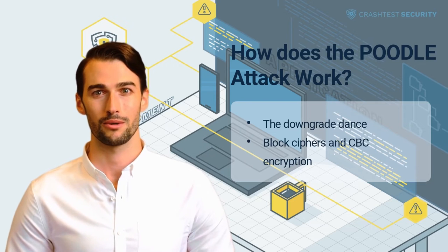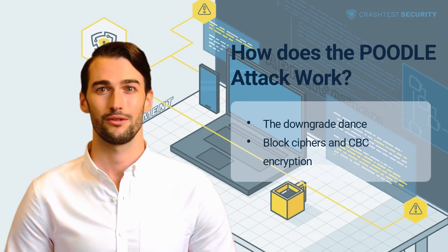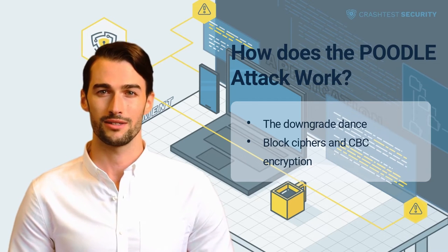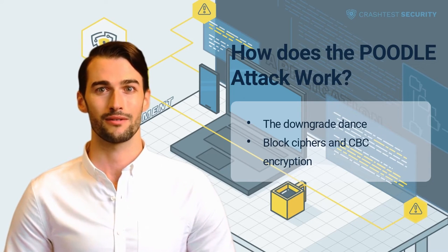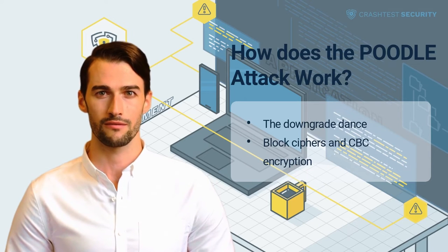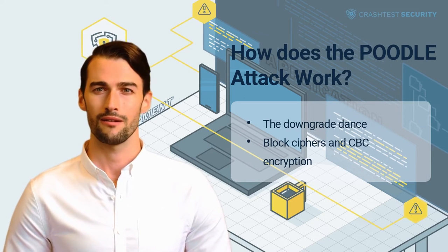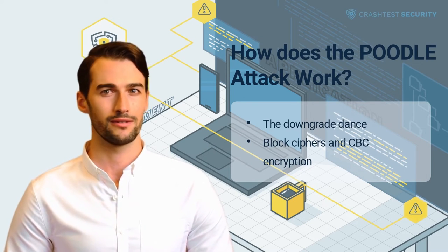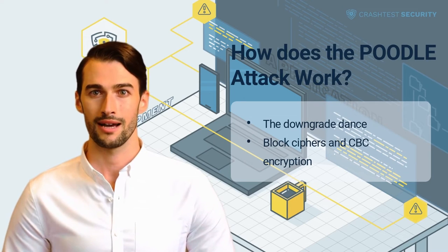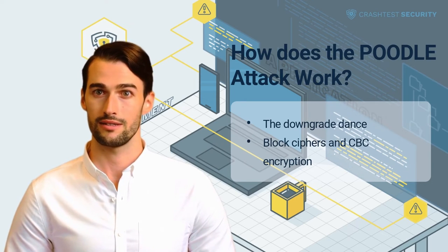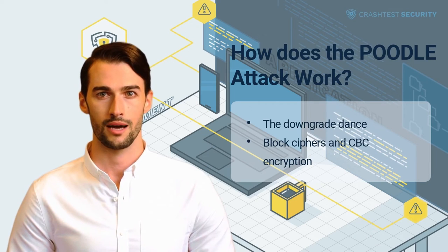Cipher suites susceptible to a Poodle attack use a cipher block chaining encryption mode. In CBC, the plaintext is first broken up into blocks, then padding bytes or a whole padding block are added at the end to ensure all blocks are the same size. The plaintext in the first block is XORed with a random initialization vector to generate an intermediary value, which is then encrypted by the block cipher to produce ciphertext. The resulting ciphertext block serves as the initialization vector for the next block. To decrypt the message, this process is reversed — each block is chained to the previous one.